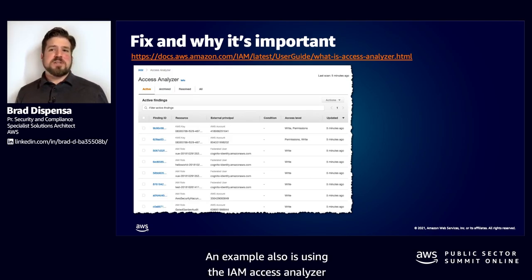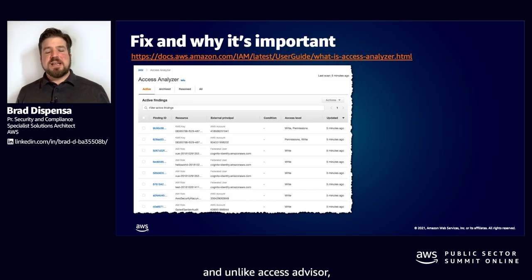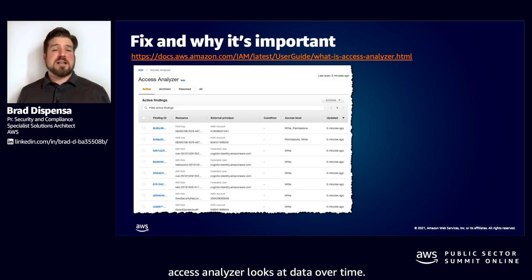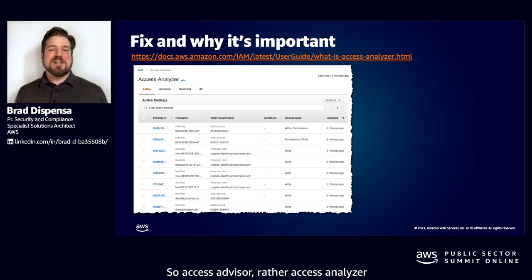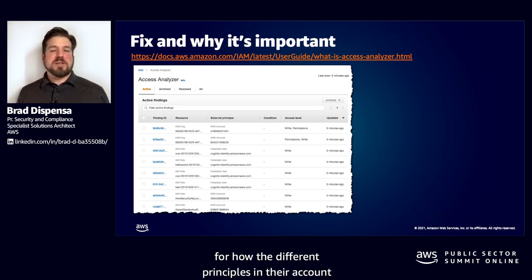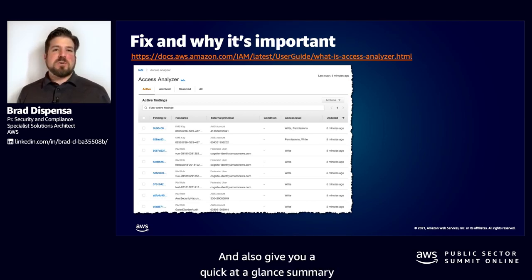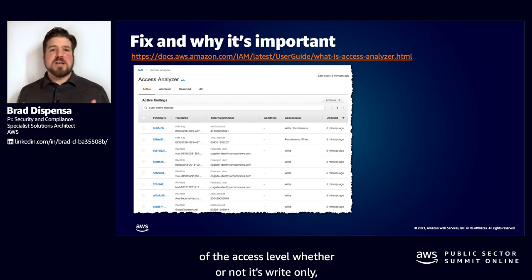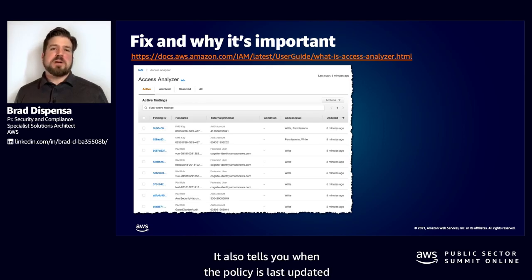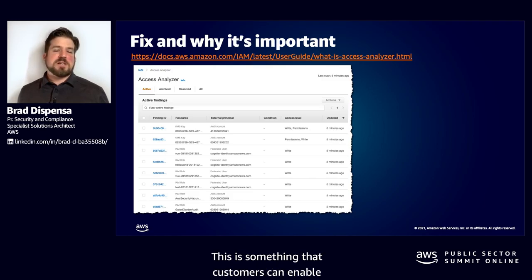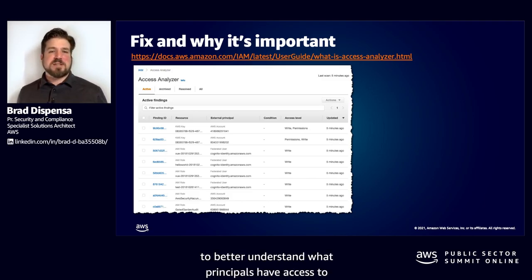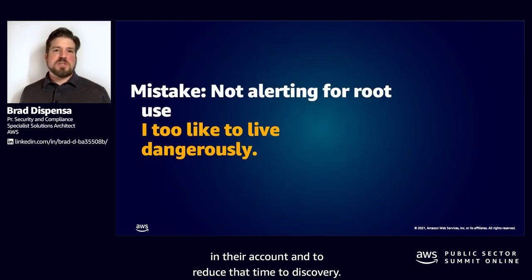Another example is using the IAM Access Analyzer. Unlike Access Advisor, Access Analyzer looks at data over time and allows customers to get a better sense of how the different principals in their account are using the access they have. It also gives a quick at-a-glance summary of the access level — whether it's write only, read only, or some combination in between — and tells you when the policy was last updated, giving you an idea of the staleness of the policy. This helps customers better understand what principals have access to and reduce the time to discovery.